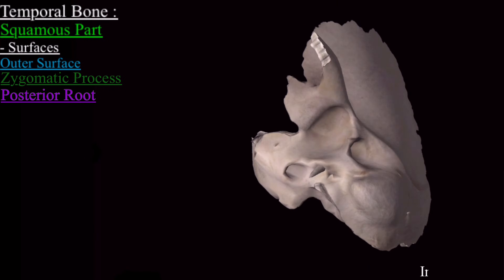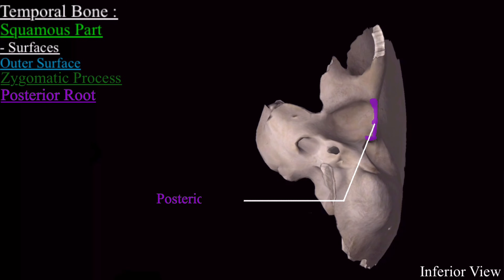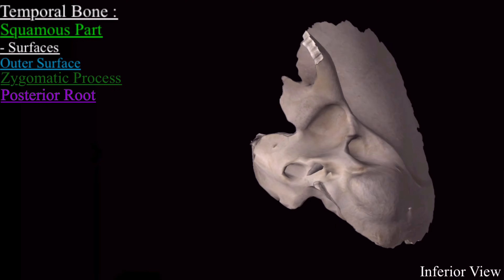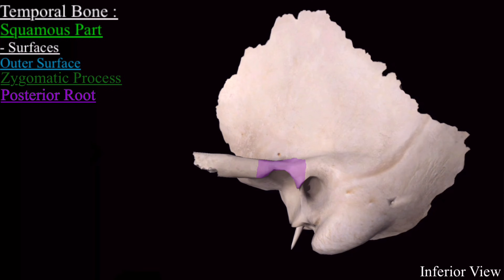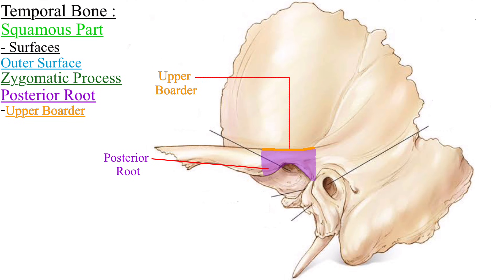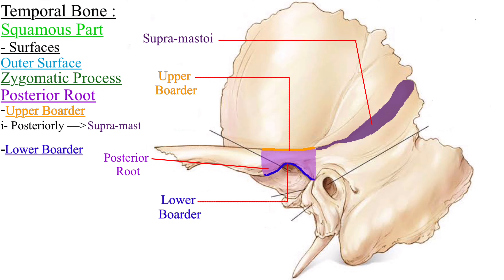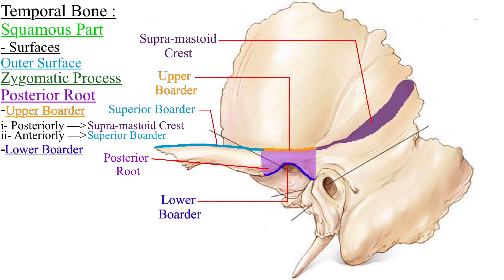In the inferior view this is the posterior root, and looking at it from the lateral view, it has an upper border and a lower border. The upper border of the posterior root is continuous posteriorly with the supramastoid crest and anteriorly with the superior border of the zygomatic process.